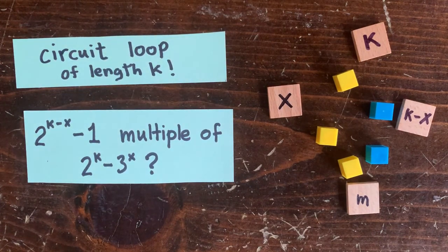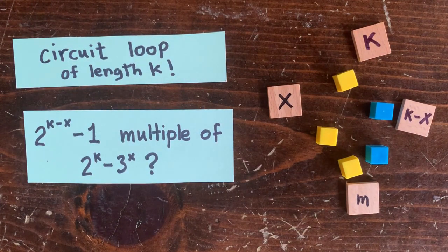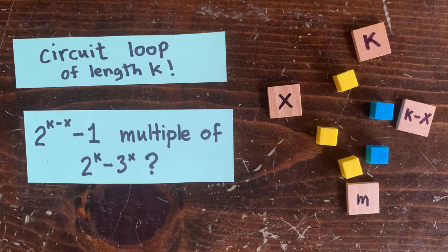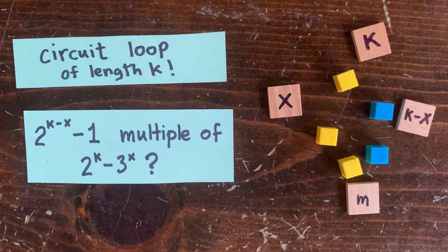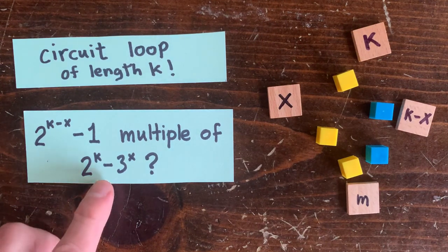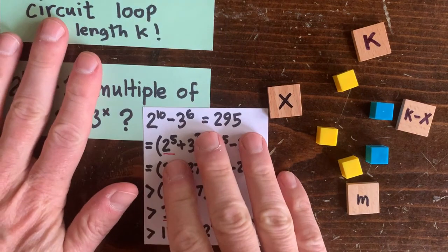When we look at lots of values for k and x, we find that not only does this never seem to be a multiple of that, it actually always seems to be smaller than that. And last time we had a pretty good proof.